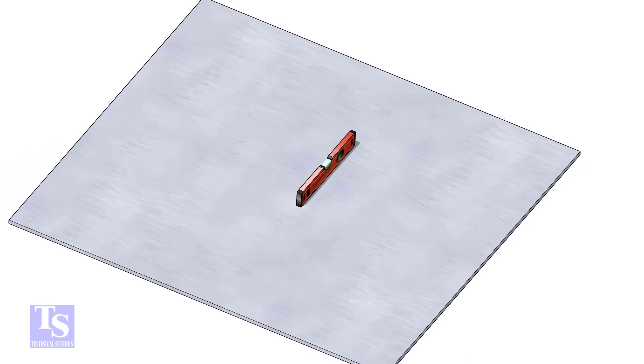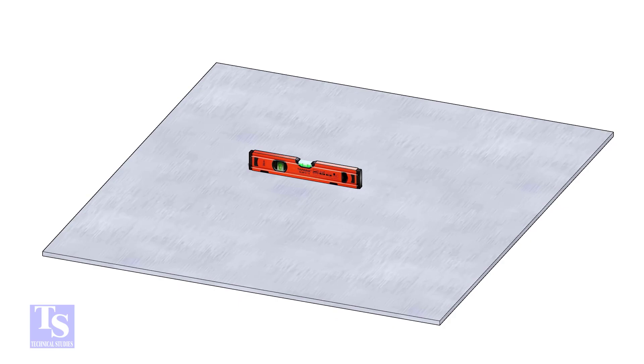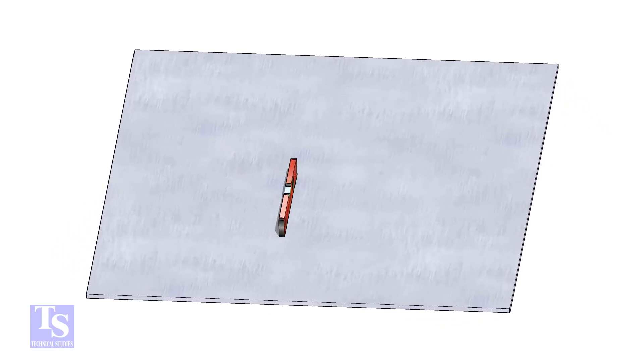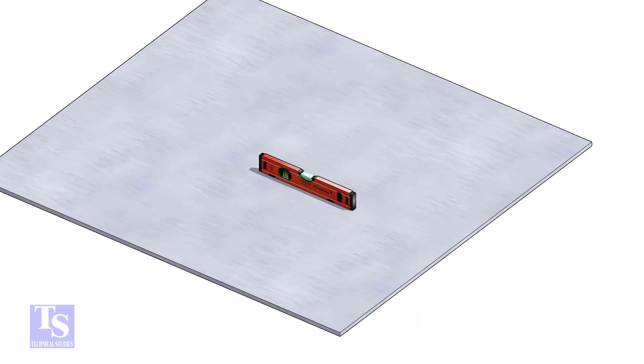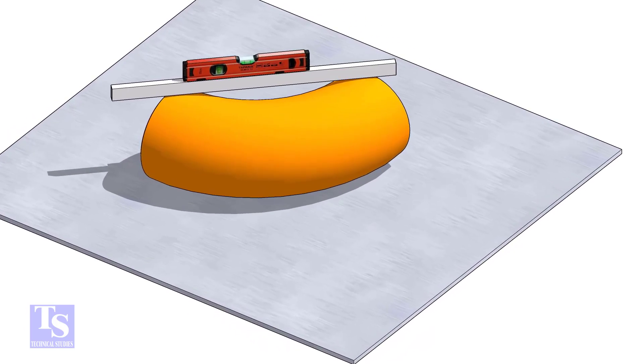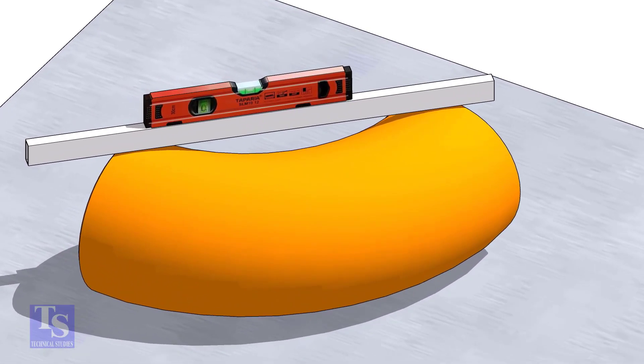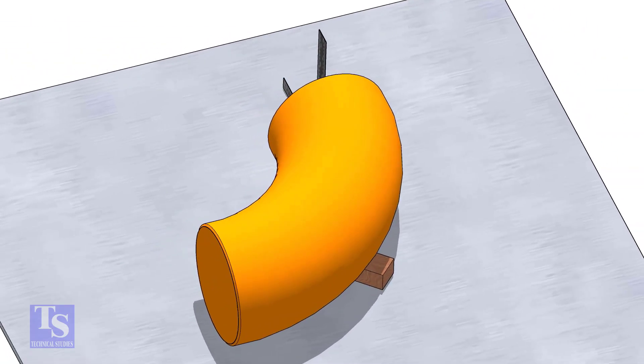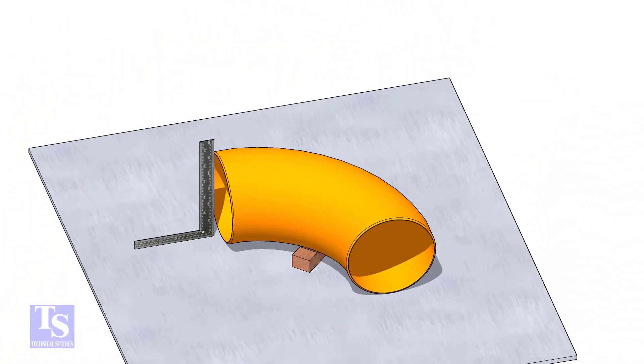Let us mark the center of the elbow. Choose a leveled plate and put the elbow on it. Check the level of the elbow. Check the squareness of the face of the elbow with the plate. If necessary, put some packing below as shown.